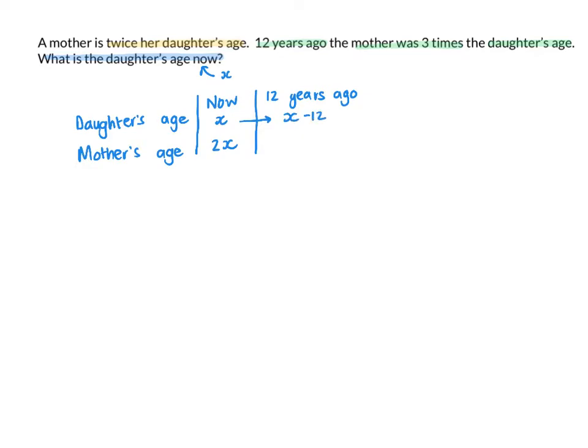For example, if you are fifteen now and you want to know how old you were twelve years ago, you'd say fifteen minus twelve. Or if the mother is forty now and you want her age twelve years ago, you'd say whatever her age is minus twelve. So twelve years ago, the mother's age is two x minus twelve.